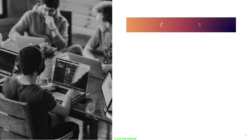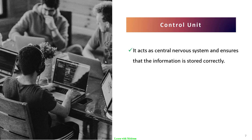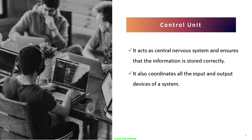Moving on to the control unit: it acts as the central nervous system and ensures that information is stored correctly. It also coordinates all the input and output devices of the system and controls the hardware operations. As the name suggests, it controls everything.